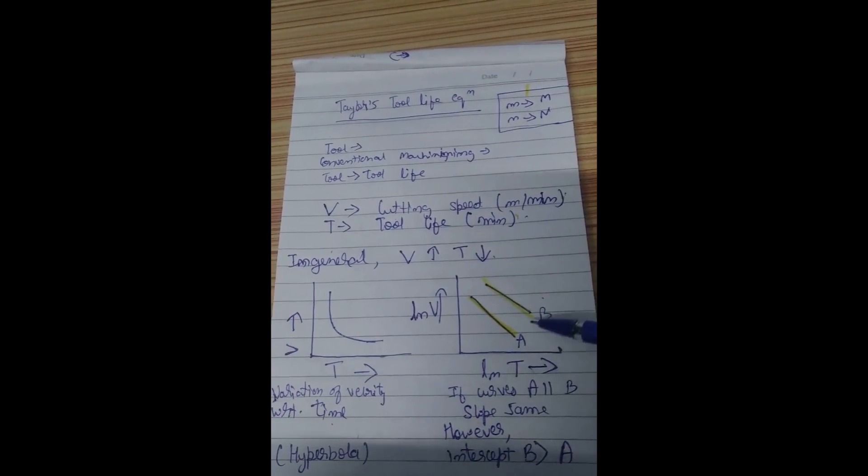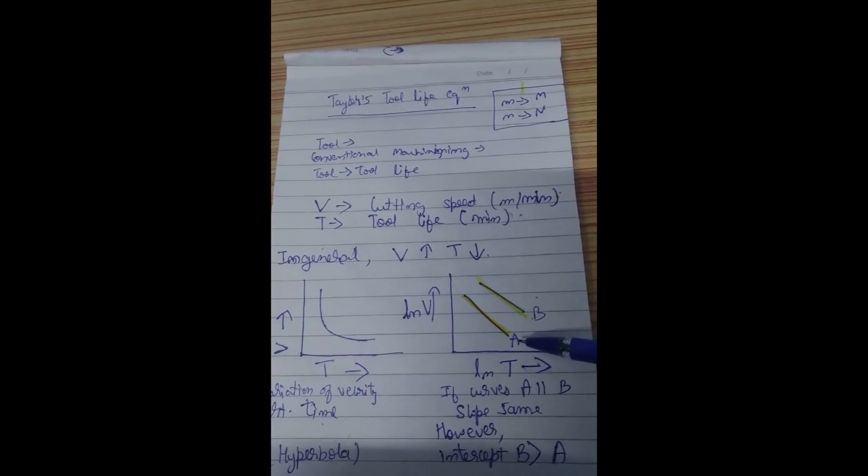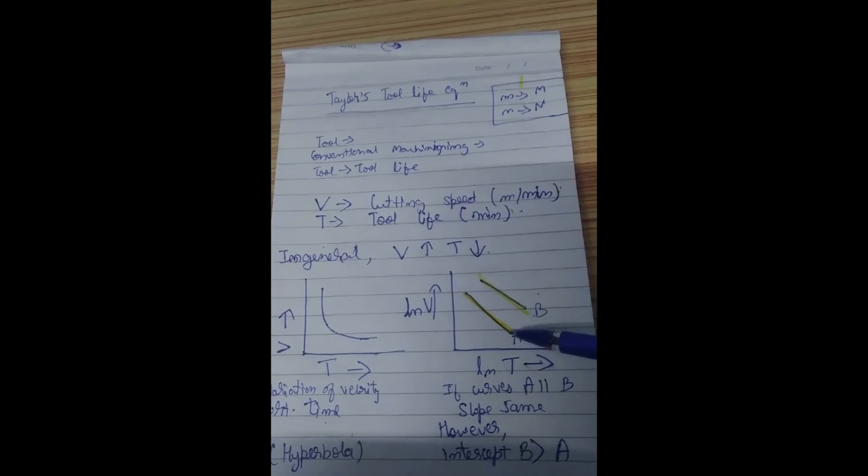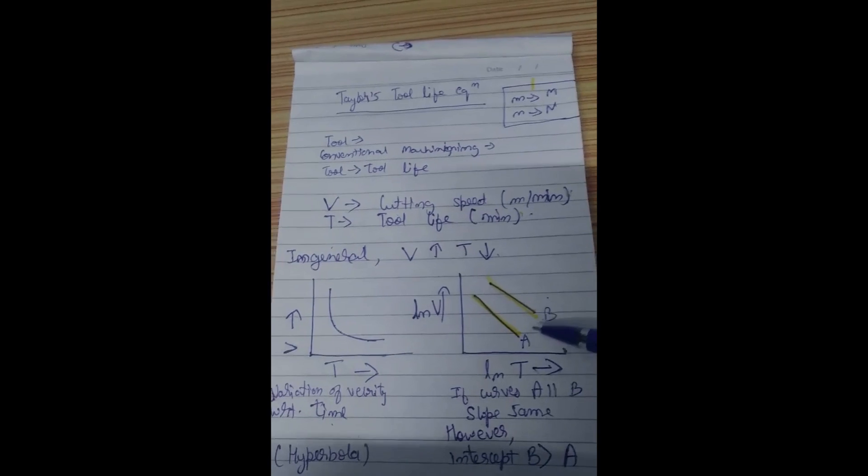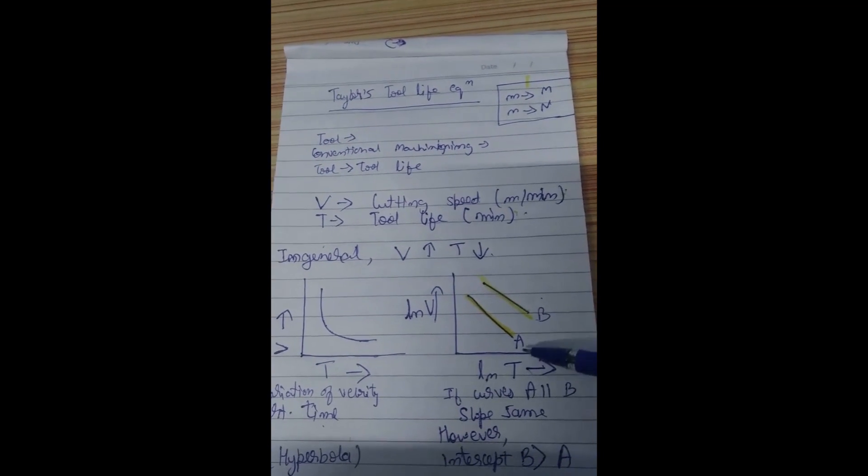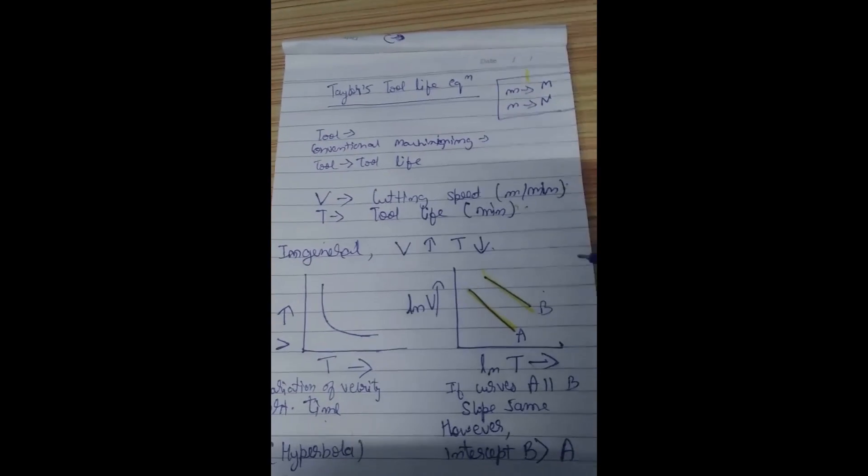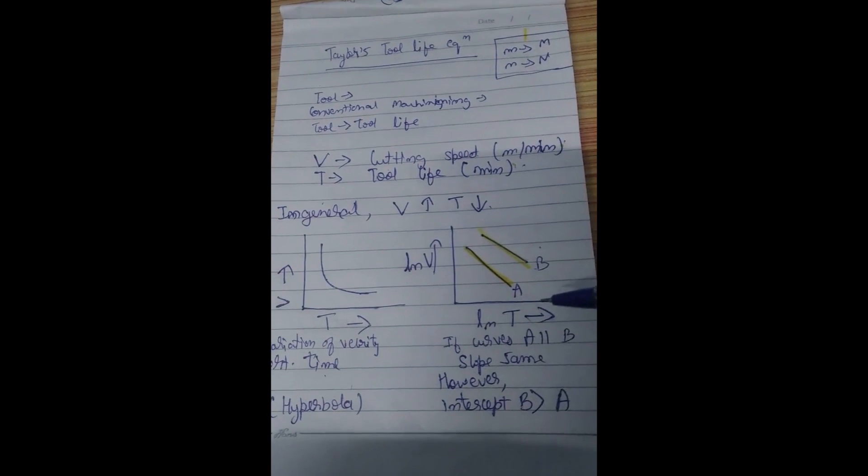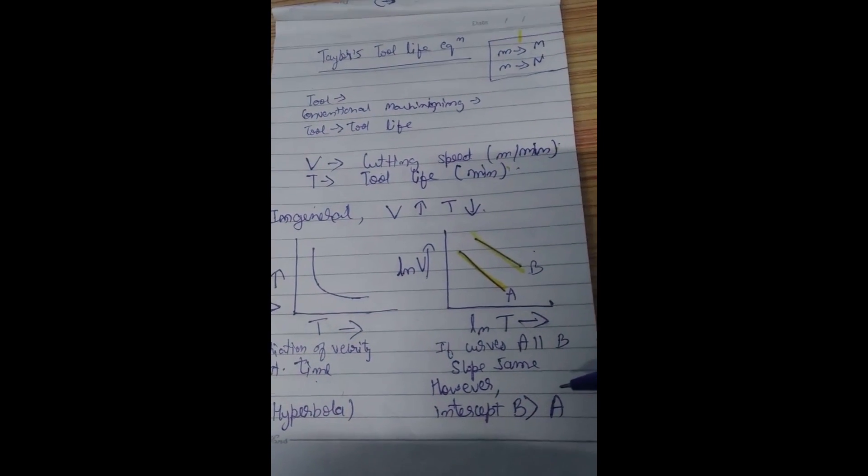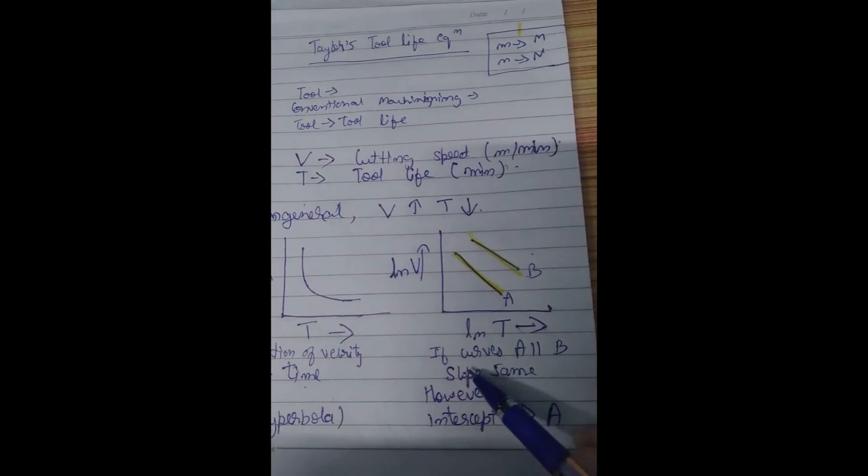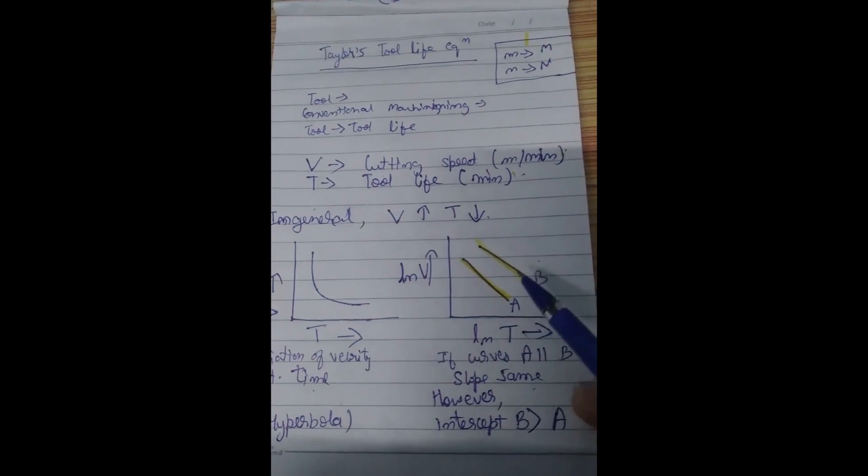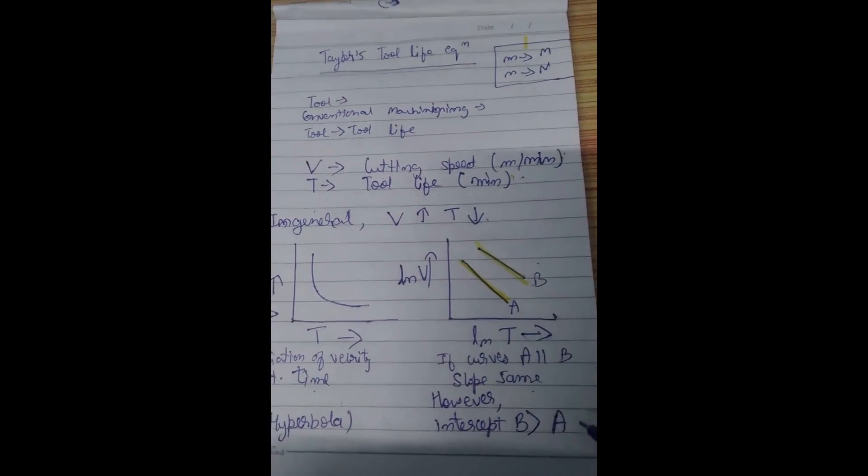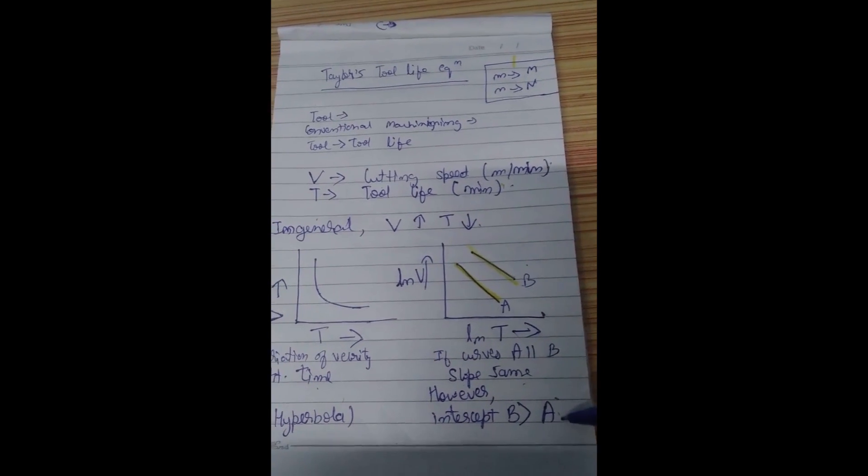Similarly if we are having two curves a and b, so considering a parallel to b, considering the tool life equations for both, in general for a and b, and if the two equations or the curves are parallel, then we can say that the slopes will be same. However the intercept will differ, as we can see intercept of b is greater than intercept of a.